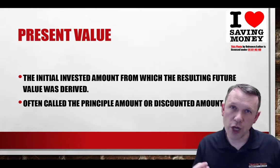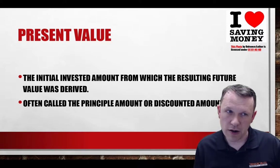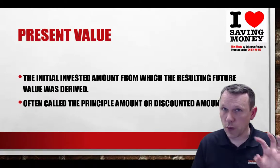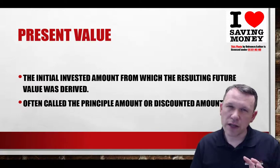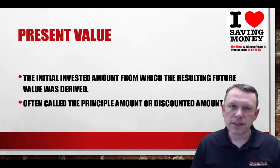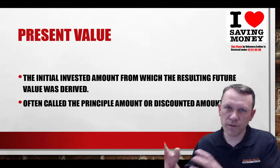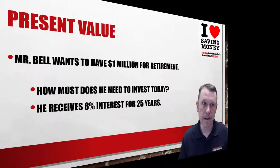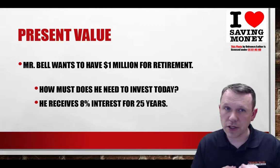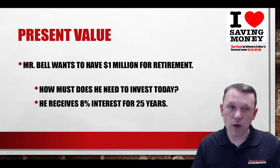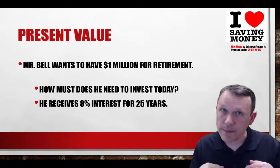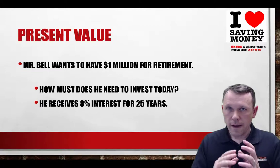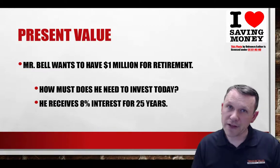Now we're going to look in the other direction — we know what we want in the future, what do we have to do in the present to get there? Present value is the initial invested amount from which the resulting future value is derived. As we wait and interest works on our money, it's also called principal or a discounted amount. Moving from future to present is called discounting.